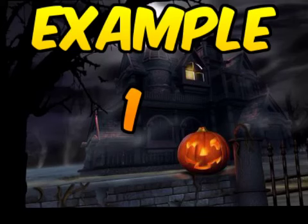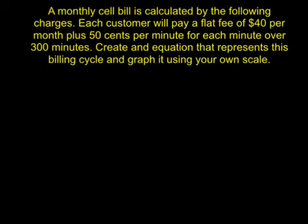Example one: a monthly cell bill is calculated by the following charges. Each customer will pay a flat fee of forty dollars per month plus fifty cents per minute for each minute over three hundred minutes. Create an equation that represents this billing cycle and graph it using your own scale. To graph this we need it in the form y equals mx plus b.